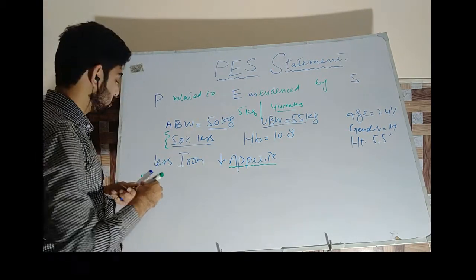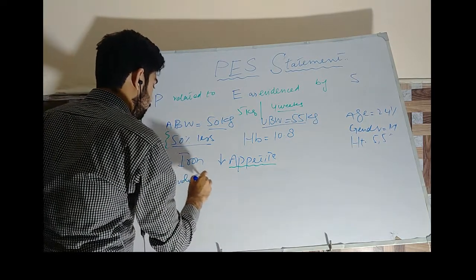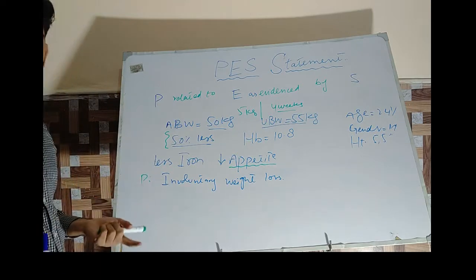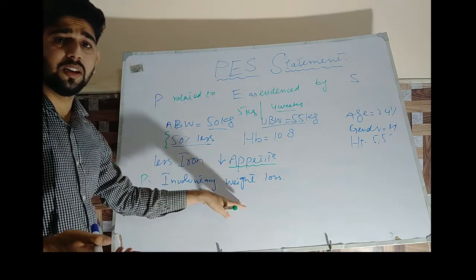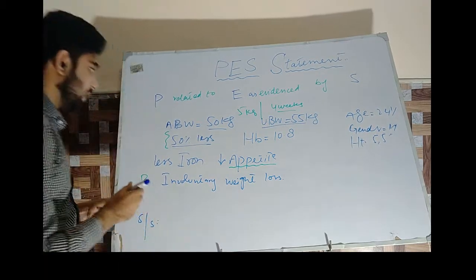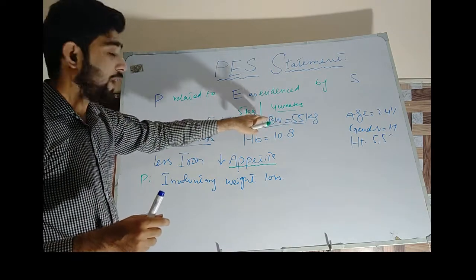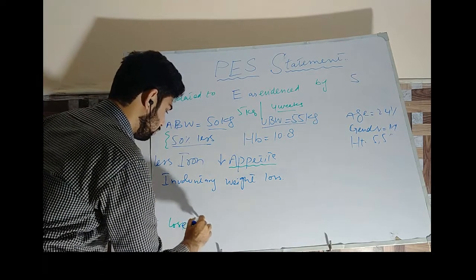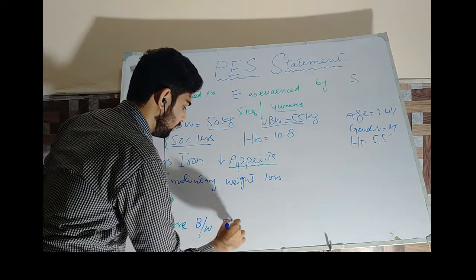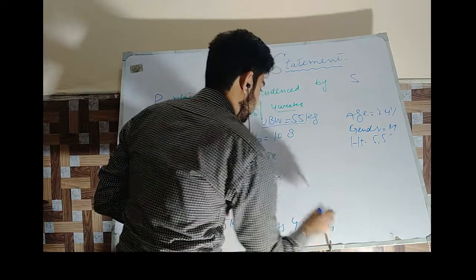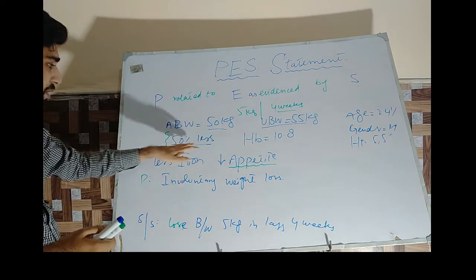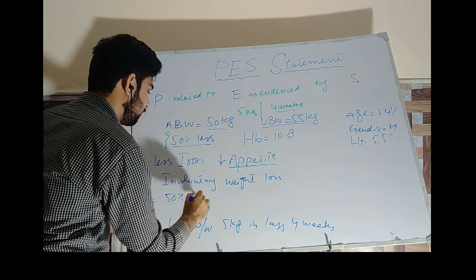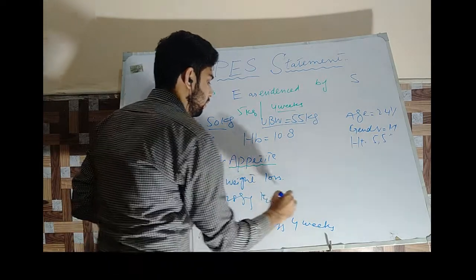The problem is involuntary weight loss. How we came to know that the person is losing body weight involuntarily — what is the sign/symptom? The person lost 5 kg in the last 4 weeks. What is the etiology — the cause? Because the person is taking 50% low energy than the recommendation. So that is the etiology: person is taking 50% low energy than the recommendation.